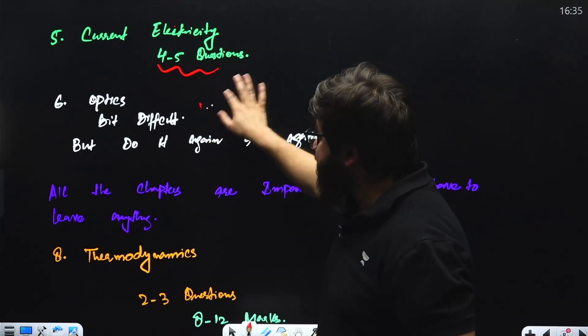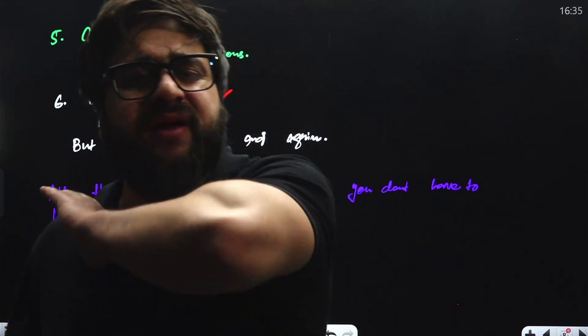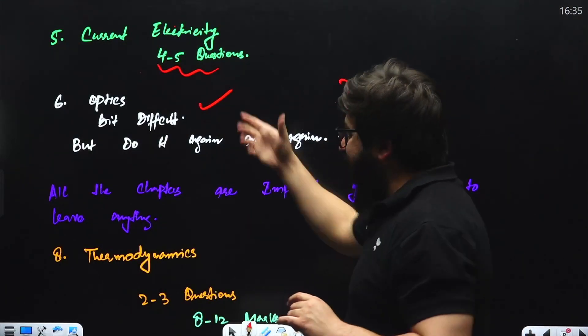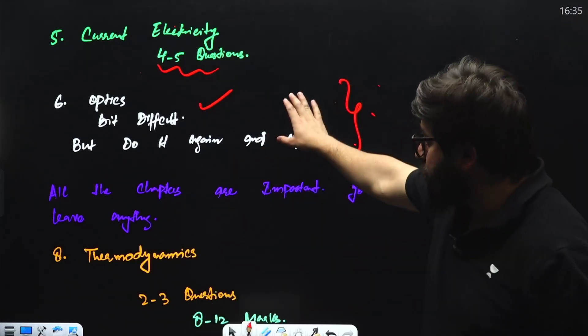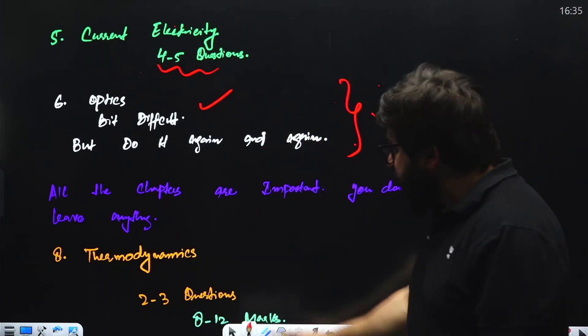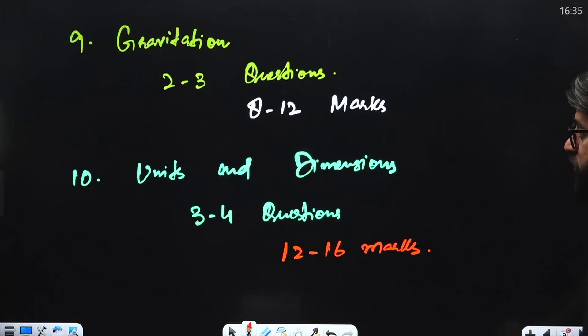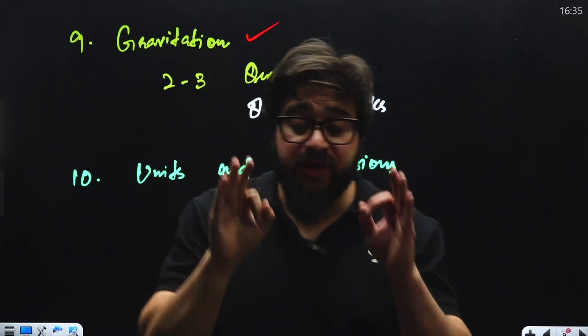Optics is not difficult, it is completely formula-based, but there are an immense number of formulas in optics. If you make the formula sheet and do the revision of this chapter, everything will be sorted. You will be able to clear each and every single thing. Then you have got Thermodynamics, two to three questions you can expect from this one also, and Gravitation, very important, two to three questions from the gravitation portion also.